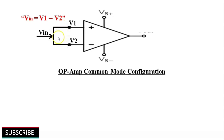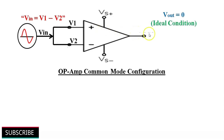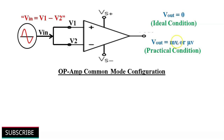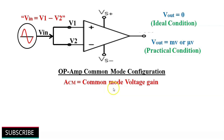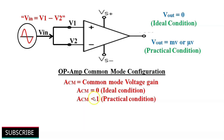If two inputs of an operational amplifier are tied together and a common voltage is applied, this configuration is called common mode configuration. The output of the operational amplifier should be 0 V in ideal conditions, but practically some small voltage — millivolts or microvolts — appears at the output. This voltage is called the common mode output voltage. ACM represents the common mode voltage gain; ACM should equal 0 in ideal conditions, but ACM is less than 1 in practical conditions.